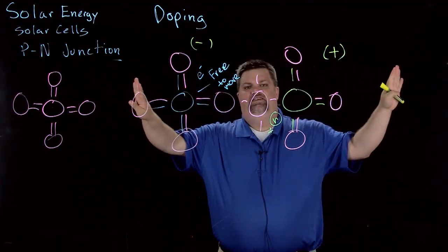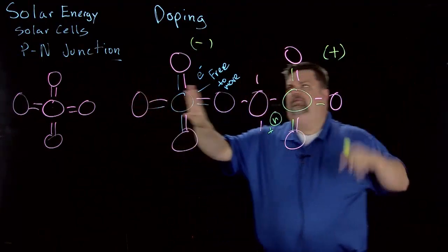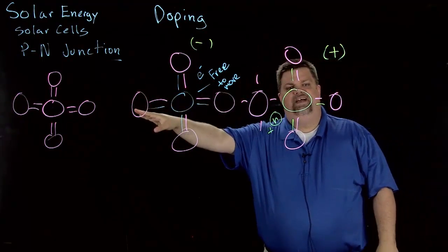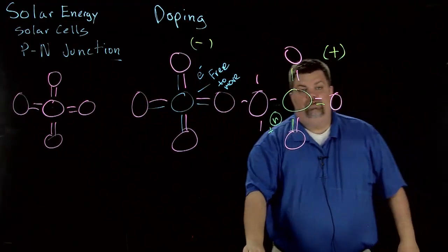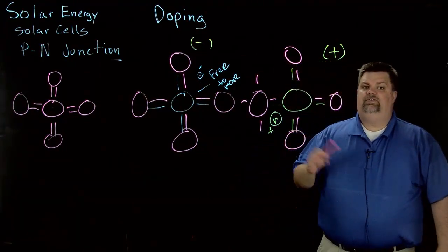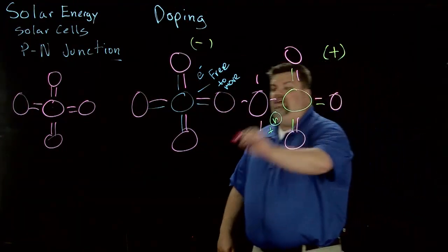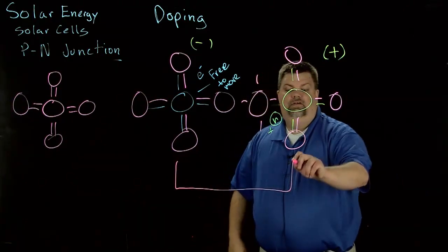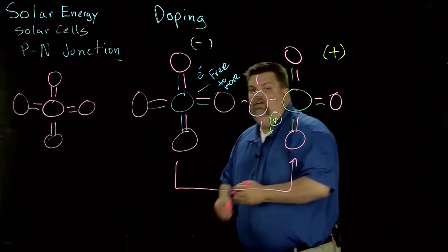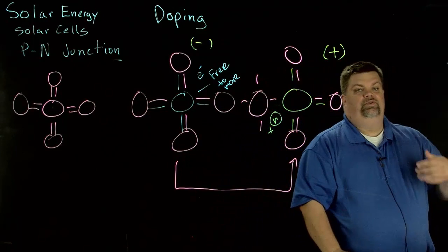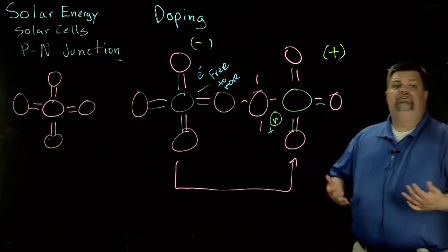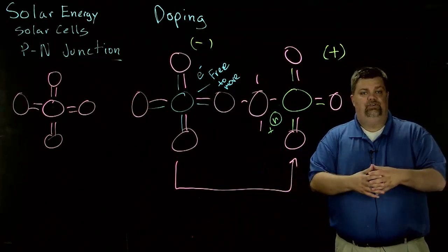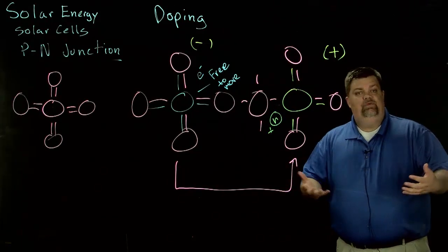If I separate these two, what I end up having is I have a negative charge on one side and a positive charge on the other side. Our goal in a solar cell is to create the cell in such a way that we allow a path for those negative charges to meet up with those positive charges, which they do in nature automatically. Opposites attract, and that's how we build the solar cell.